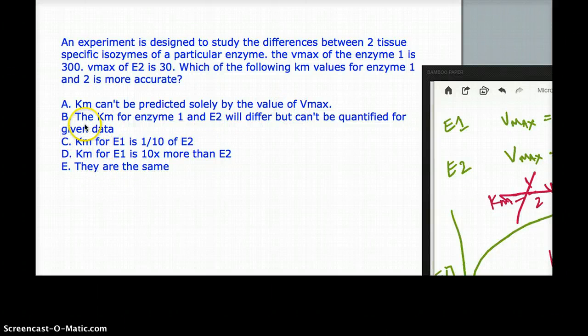Option B. The Km for enzyme 1 and enzyme 2 will differ but cannot be quantified for the given data. No matter what data you give, you cannot find Km from Vmax. It cannot be done. So that's why that is not the right answer.